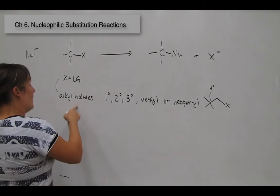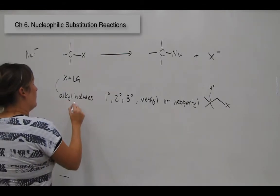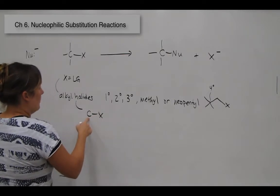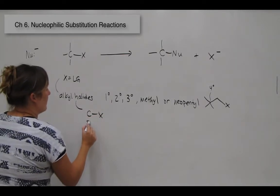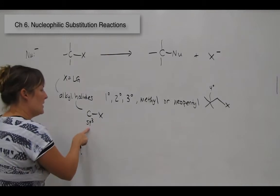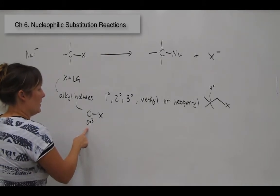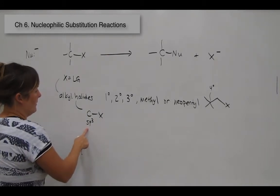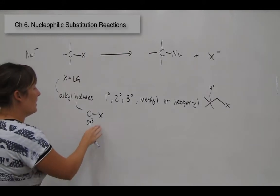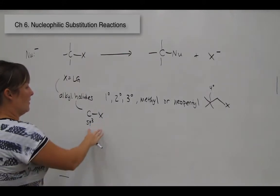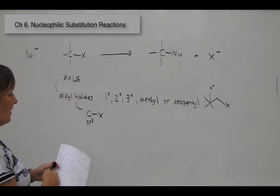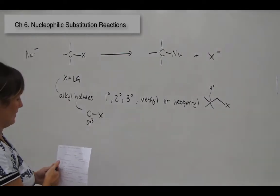Keep in mind that for alkyl halides, the carbon that your X is attached to has to be sp3. It cannot be sp2, and it cannot be sp. If you see an sp2 or sp halogen, you ignore it. Only sp3 alkyl halides can take place in the reactions discussed in this chapter.